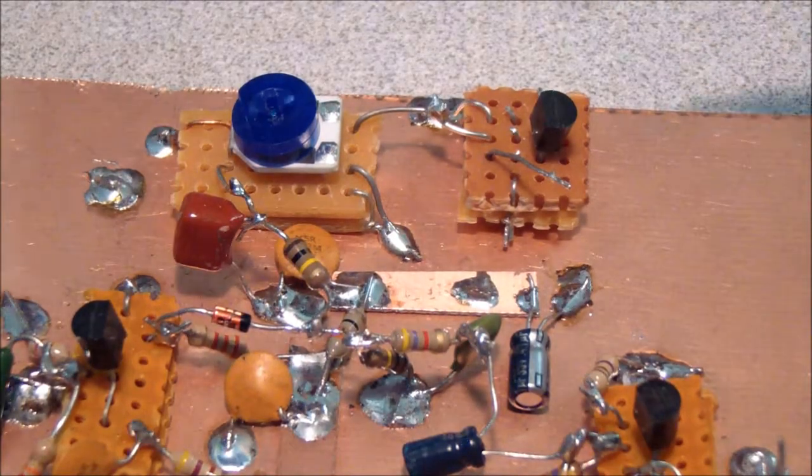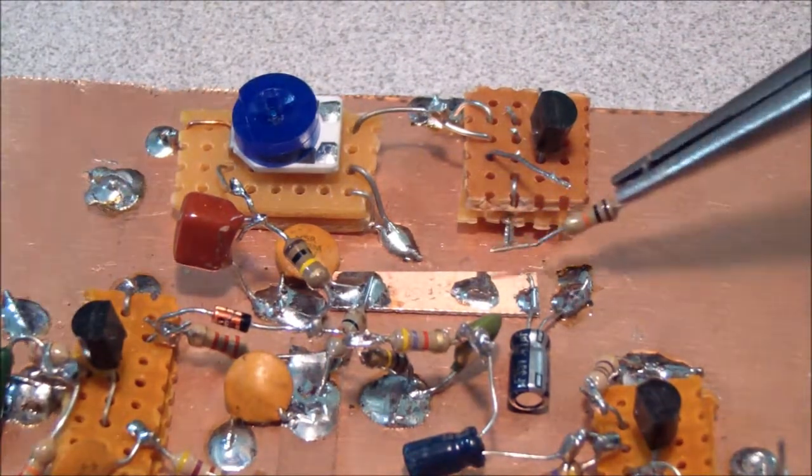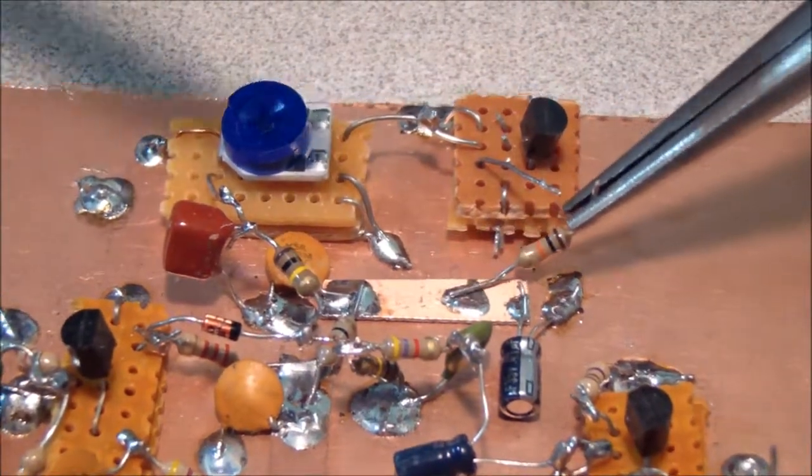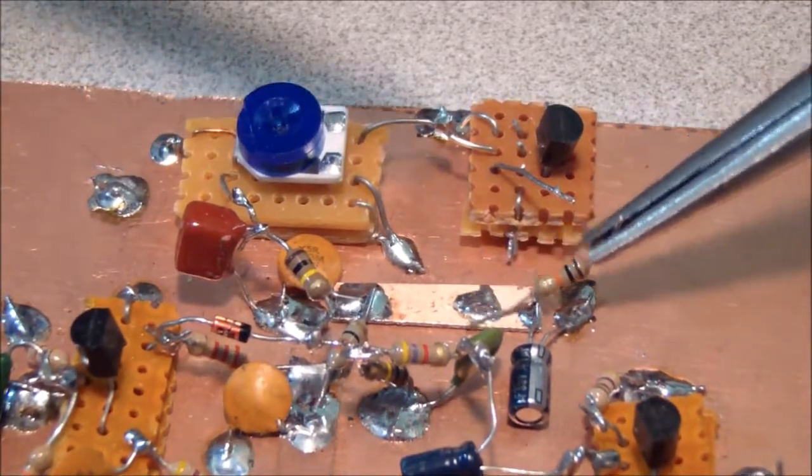The next thing we're going to do is install the load resistor for the collector. This is a 10,000 ohm 10K resistor.